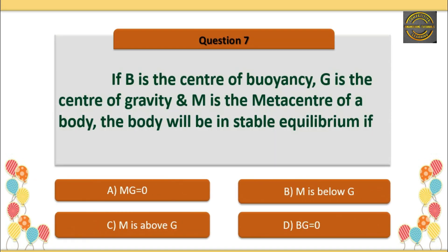Q7: If B is the centre of buoyancy, G is the centre of gravity, and M is the metacentre of a body, the body will be in stable equilibrium if — Option C is correct — M is above G.